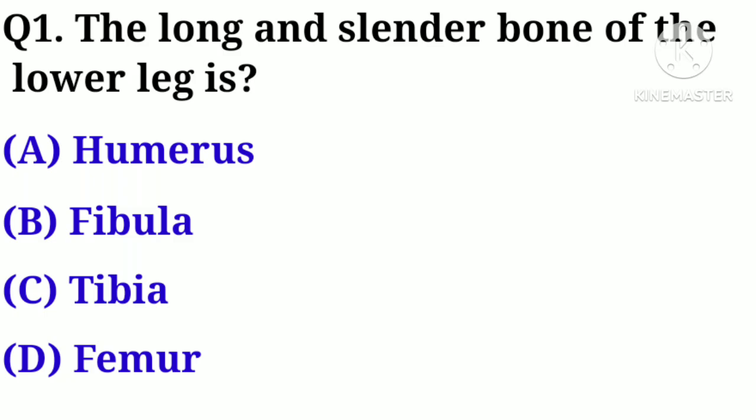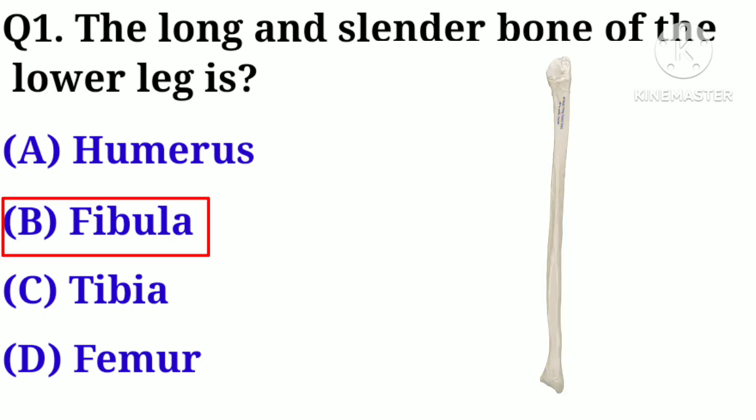Q1. The long and slender bone of the lower leg is: A. Humerus, B. Fibula, C. Tibia, D. Femur. Answer: B. Fibula.